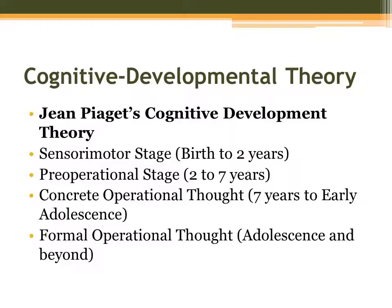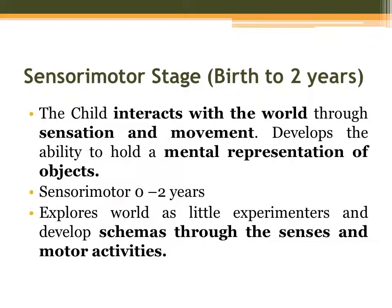For the cognitive developmental theory we will use John Piaget's cognitive development theory. According to Piaget, there are four developmental stages where a child develops its cognitive processes. The first is the sensorimotor stage — birth to two years old; pre-operational stage — two to seven years old; concrete operational thought — seven years to early adolescence; and formal operational thought — adolescence and beyond.